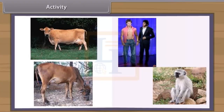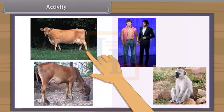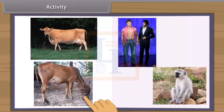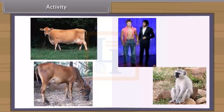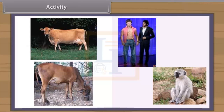When we study physical characters of desi cow and jersey cow, we find very few differences. But when we see them in a crowd, jersey cow can be distinguished from a distance due to its height and stature. But when we look at cow and monkey, we find that man resembles more to a monkey than a cow, although all are mammals.